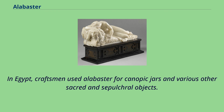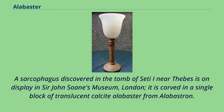In Egypt, craftsmen used alabaster for canopic jars and various other sacred and sepulchral objects. A sarcophagus discovered in the tomb of Setia near Thebes is on display in Sir John Soane's Museum, London. It is carved in a single block of translucent calcite alabaster from alabastron.